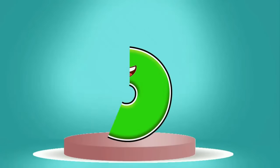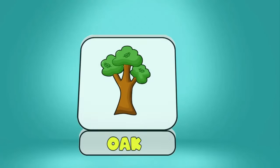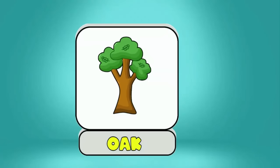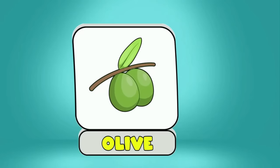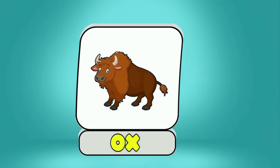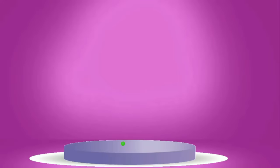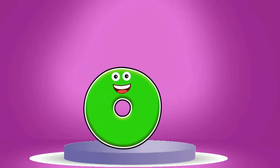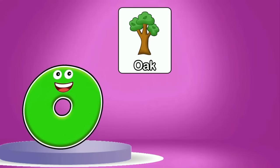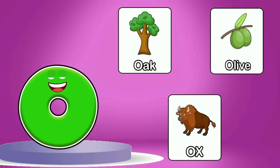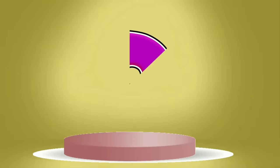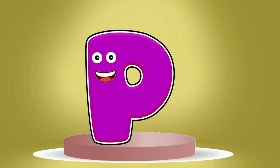This is O. O is for Oak, Olive, Ox. This is P. P is for Peach, Panda, Pumpkin.